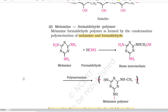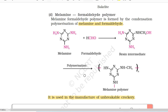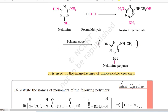D. Melamine Formaldehyde Polymer. Melamine formaldehyde polymer is formed by the condensation polymerization of melamine and formaldehyde. Melamine plus formaldehyde (HCHO) gives a resin intermediate, then with polymerization reaction melamine polymer forms. It is used in manufacture of unbreakable crockery.